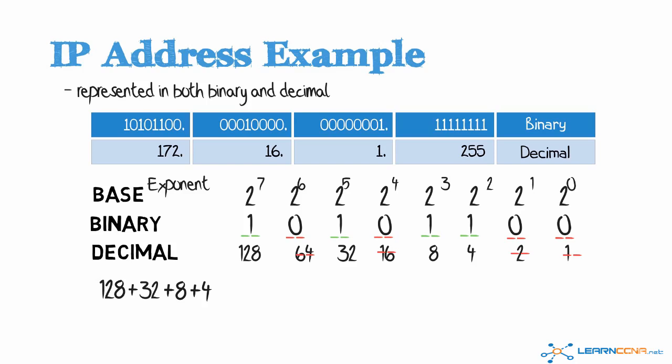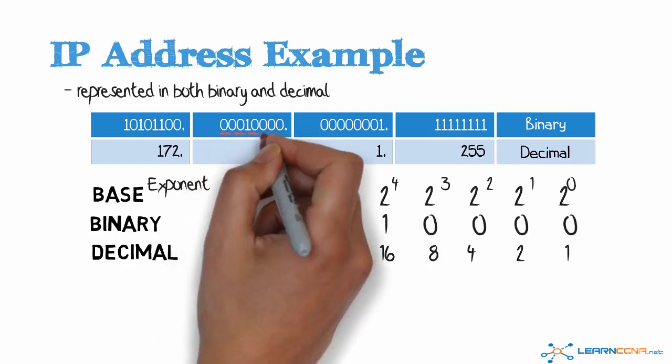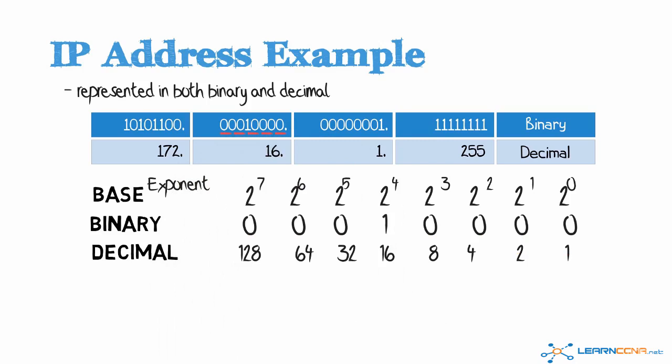That gives us 128 plus 32 plus 8 plus 4, which equals 172. So 10101100 in binary equals 172 in decimal. Looking at the second octet, we have three binary zeros followed by a binary one, followed by four binary zeros.